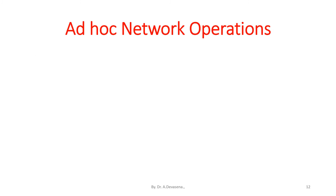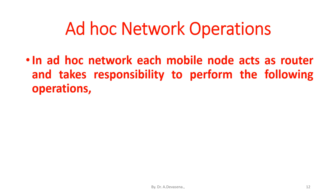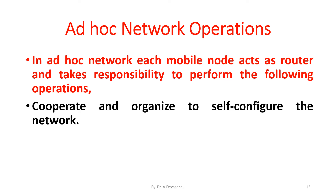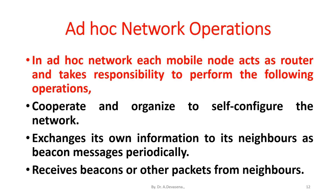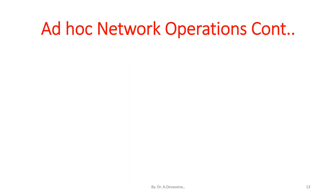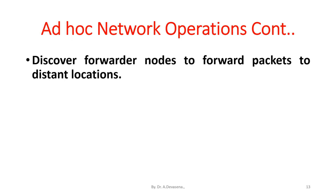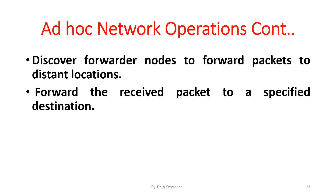Ad Hoc network operations: in an Ad Hoc network, each mobile node acts as the router and takes responsibility to perform the following operations. Ad Hoc networks cooperate and organize to self-configure the network. Each node exchanges its own information to its neighbors as beacon messages periodically, receives beacons or other packets from neighbors, discovers forwarder nodes to forward packets to distant locations, forwards the received packet to a specified destination, and broadcasts the packet to all other neighbors within its transmission range.